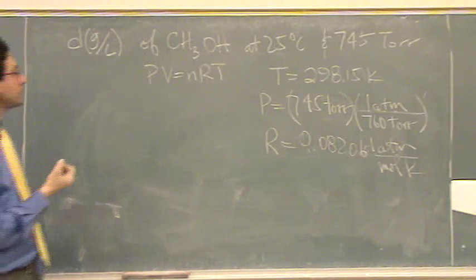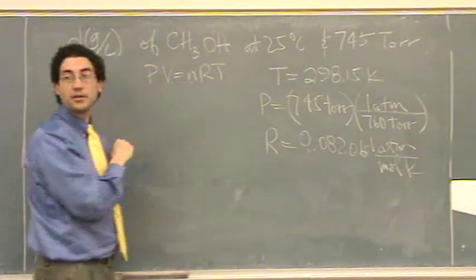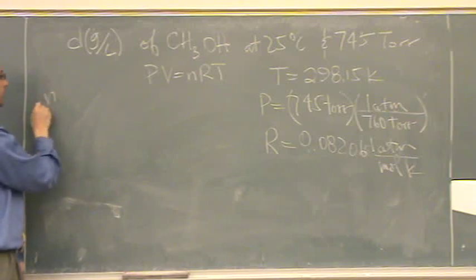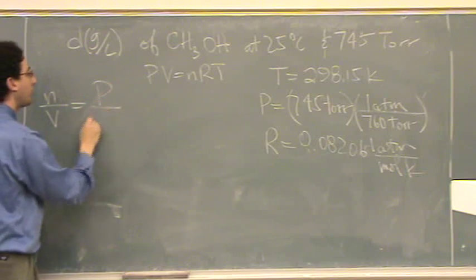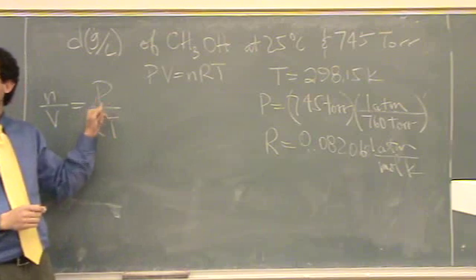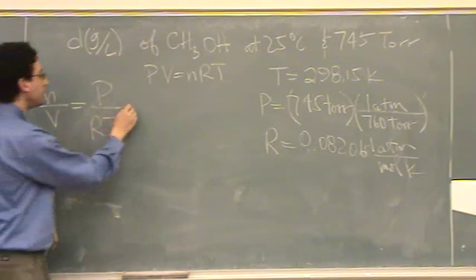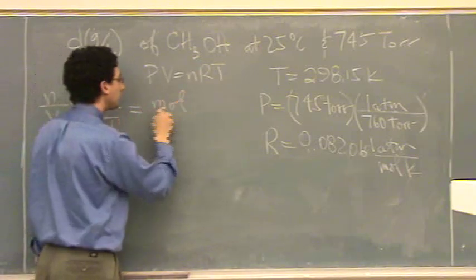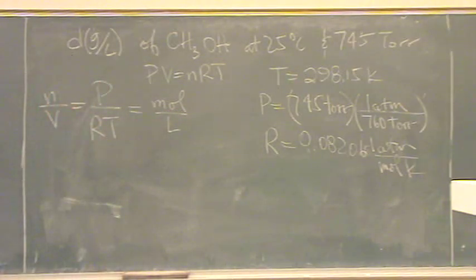And what, the only things I don't know now are moles and volume. Well, that's okay. That's essentially my density. So let me show you by writing this: n over V is P over RT. So you see how I could calculate this right now? I know P, R, and T. What's the units of n over V? Moles per liter. Kind of like molarity, not exactly, because it's a gas.